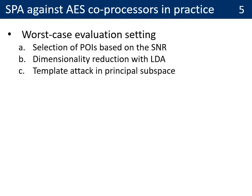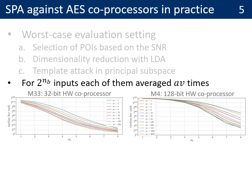As a result, in the paper, we tried to assess the side-channel security of AES coprocessors, ideally in a worst-case manner. We used three main steps: first, we selected points of interest based on their signal-to-noise ratio; second, we reduced dimensionality using linear discriminant analysis; and finally, we performed the template attack in a principal subspace. We performed the attacks for 2^NB inputs with different levels of averaging. The results are shown for a 32-bit hardware coprocessor on the left and a 128-bit hardware coprocessor on the right. The x-axis is the value of NB, the y-axis is the median key rank (the security level), and the colors represent different levels of averaging.